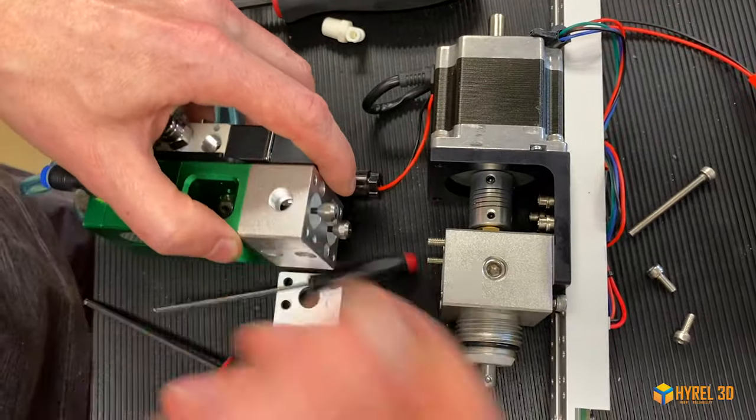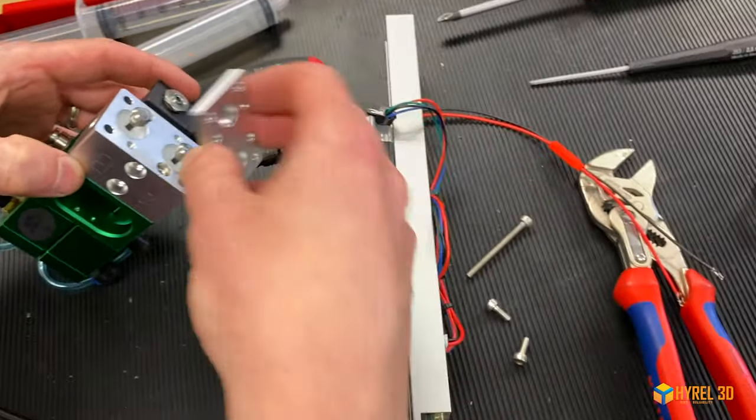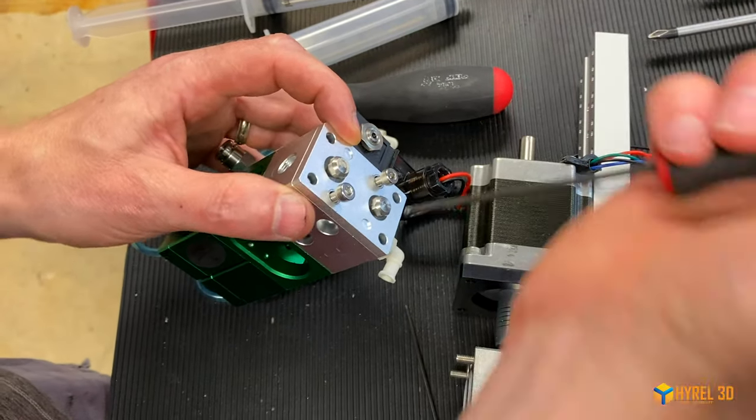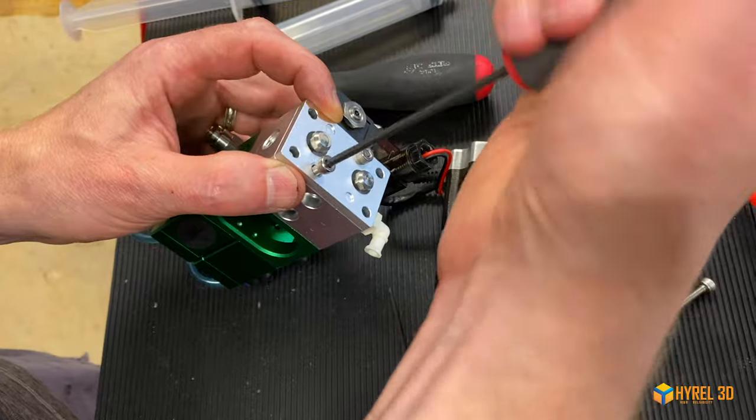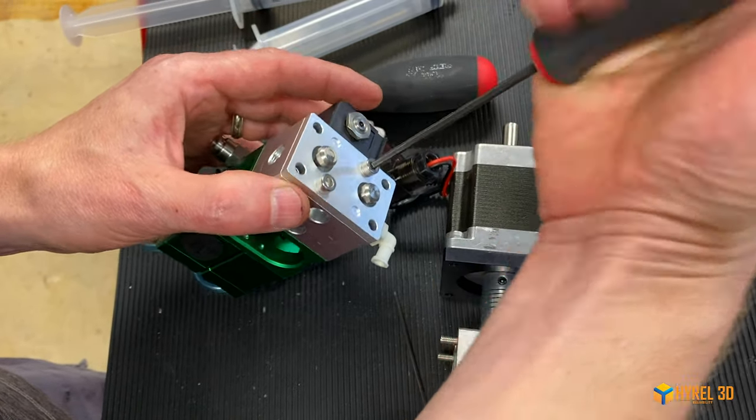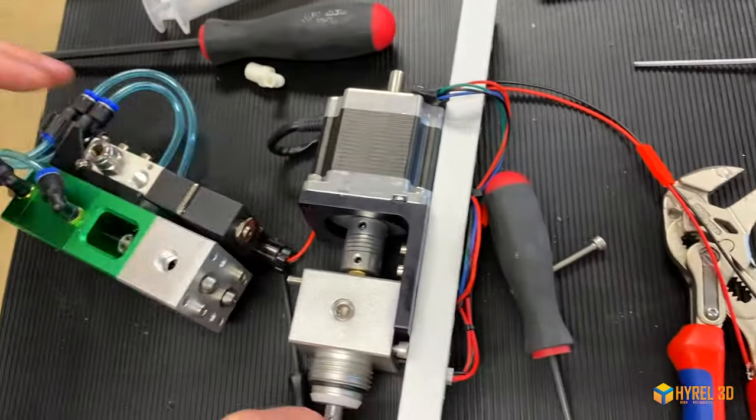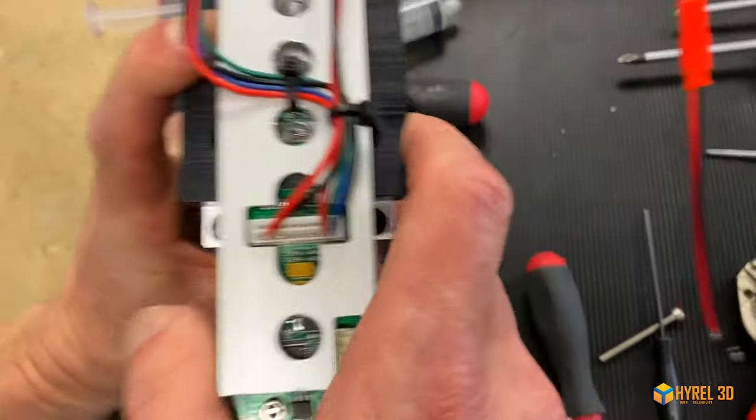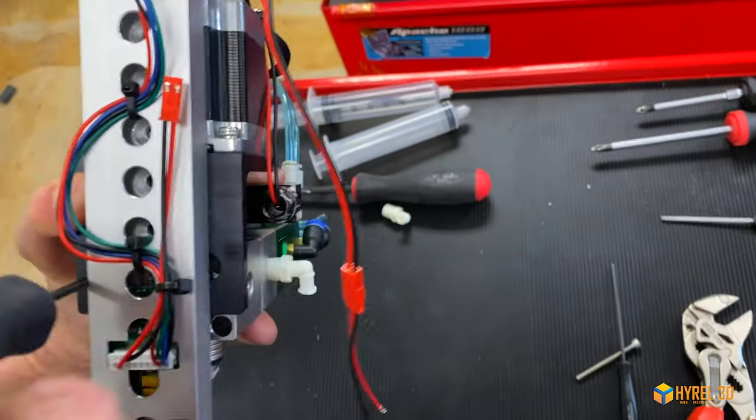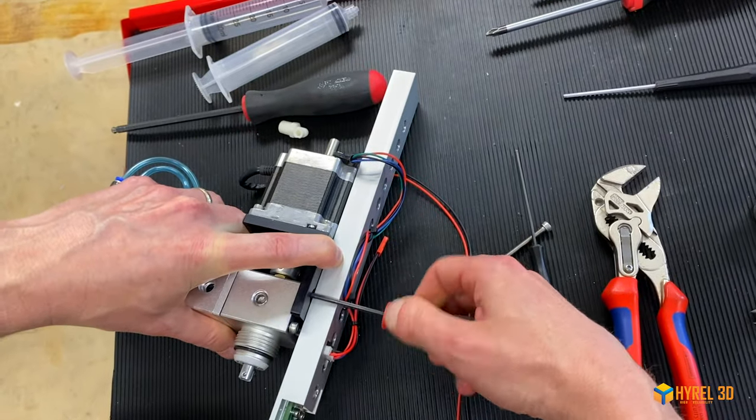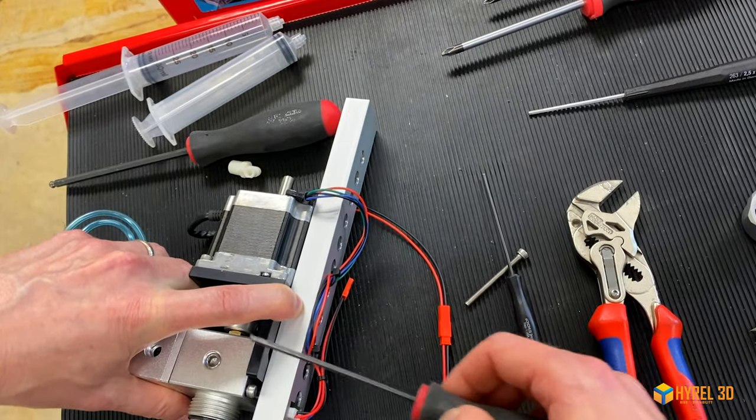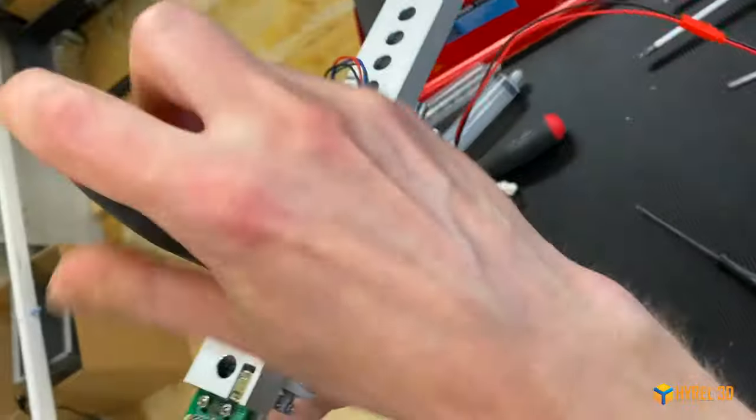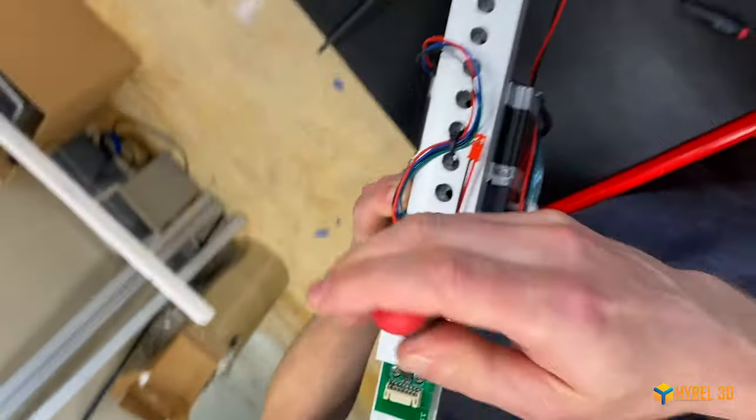For reassembling, you need a ball end driver for this because you're going in at a slight angle, or it'll just be easier with one. What I'm doing here is I'm not tightening this all the way. I'm just going to snug it, or just barely tight. I'm going to go to the opposite corner until I just start to feel some resistance.